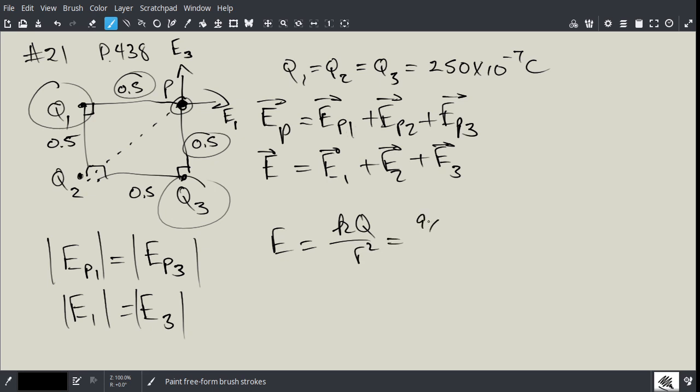What is this value? It's 9 times 10 to the power of 9 times Q of 250 times 10 to the negative 7 coulombs, divided by R squared, which is 0.5 squared. When we do that, we're going to get a number which is 9 times 10 to the power of 5 newtons per coulomb.